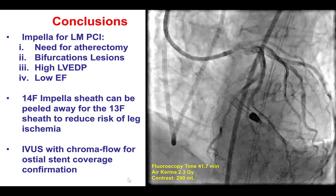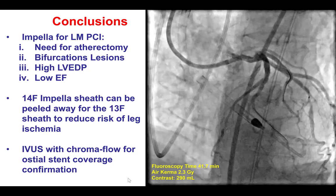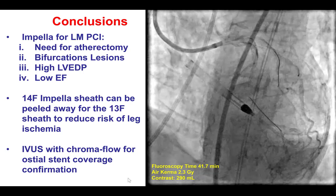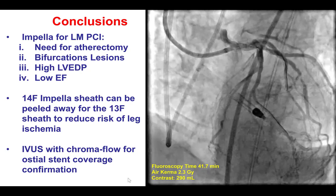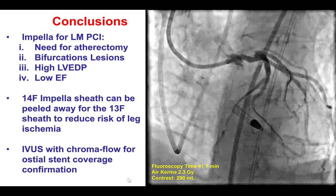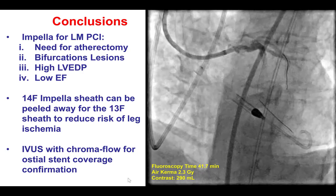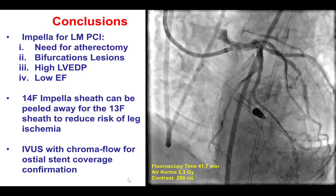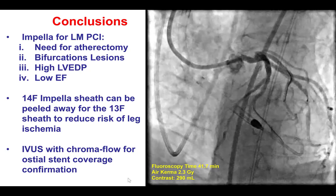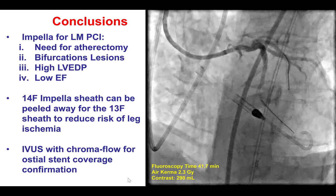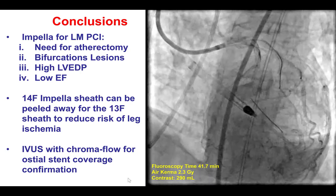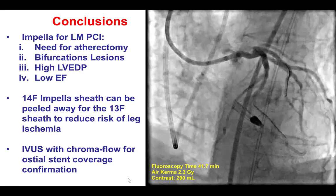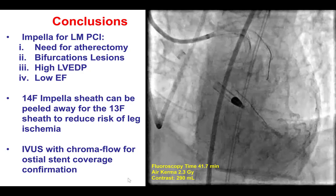Several lessons from this case. The first has to do with the use of hemodynamic support. Perhaps it was not absolutely necessary in this case, as things went very well. But because we did have significant ostial left main disease and severe calcification and trifurcation, we decided to use it even though the baseline hemodynamics were normal. Second, we did have no antegrade flow to the leg when the Impella sheath was placed. The solution was to remove the peel-away sheath and insert a repositioning sheath, which is slightly smaller, and this allowed antegrade flow to the limb.